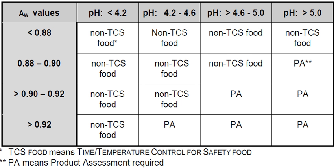Also excluded is a food that is designated as product assessment required in Table A or B of this definition and has undergone a product assessment showing that the growth or toxin formation of pathogenic microorganisms that are reasonably likely to occur in that food is precluded due to: intrinsic factors including added or natural characteristics of the food such as preservatives, antimicrobials, humectants, acidulants, or nutrients; extrinsic factors including environmental or operational factors such as packaging, modified atmosphere such as reduced oxygen packaging, shelf life and use, or temperature range of storage and use; a combination of intrinsic and extrinsic factors; or a food that does not support the growth or toxin formation of pathogenic microorganisms.